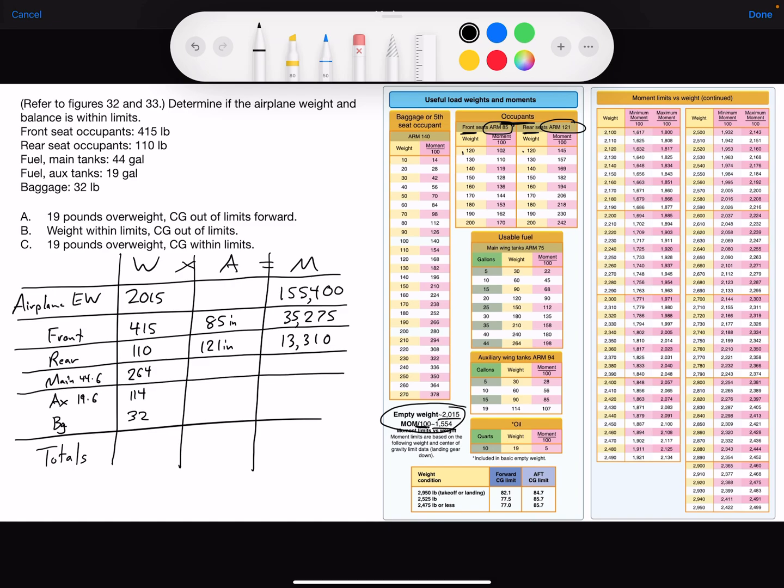Fuel tank main tank we have 264 pounds. If you go to fuel main tank, here's our 44 gallons, 264 pounds, and you can see the moment in hundreds. But you can also get the moment by taking the weight multiplied by the arm of 75 inches and we get 19,800, and that's where the 198 is coming from.